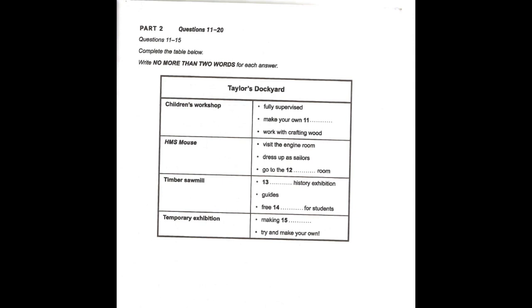Adults, all the children will be supervised by qualified staff, so you can enjoy the rest of the site if you'd like, or stay and build your own, too. Once you've built one, why not see the real thing? The star of our site is HMS Mouse, named for her speed. She is the only vessel of her class still surviving, and so we're incredibly proud of her. On board, you can visit the engine room, and you also get the chance to dress up like sailors. And if you want to see what it was like for the person at the top, go along to the captain's room.